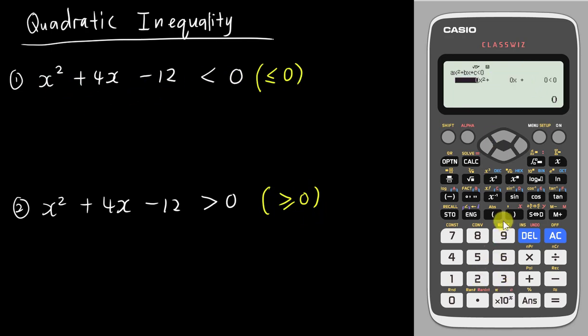If I want to solve this question with less than, I tap 2 here then insert my a, b, and c values. My a is 1, my b is 4, and my c is negative 12. The calculator tells me my x value is between negative 6 and 2.